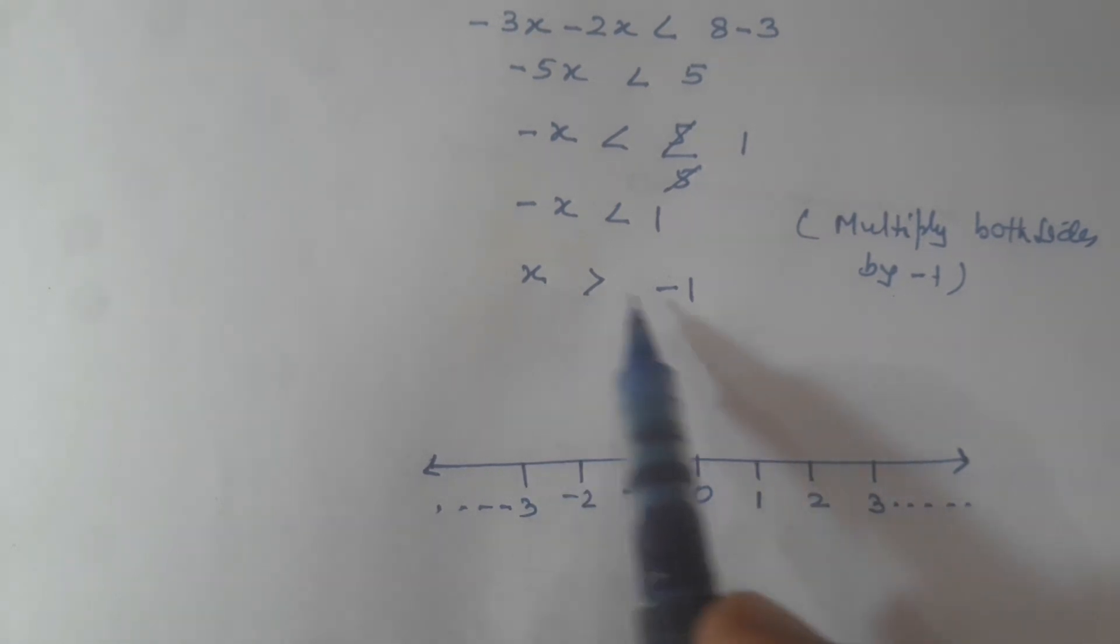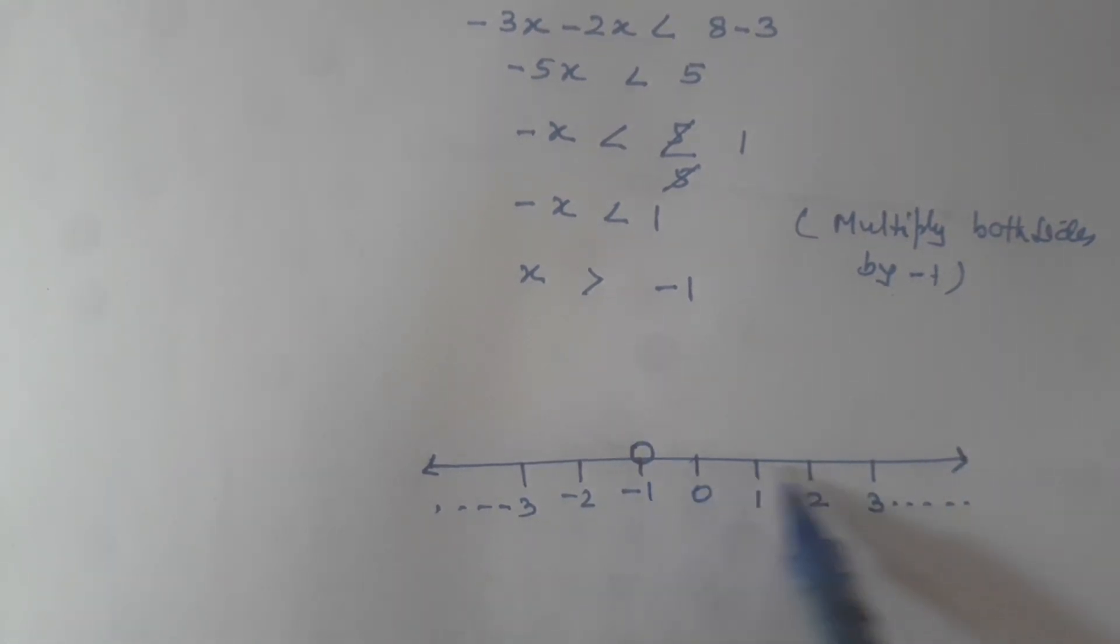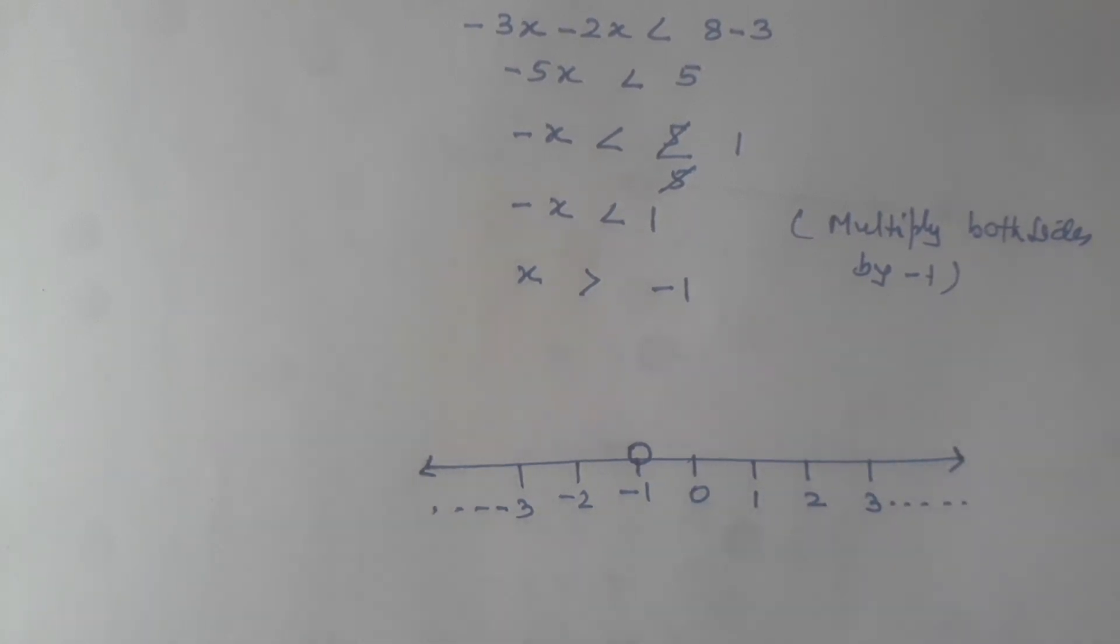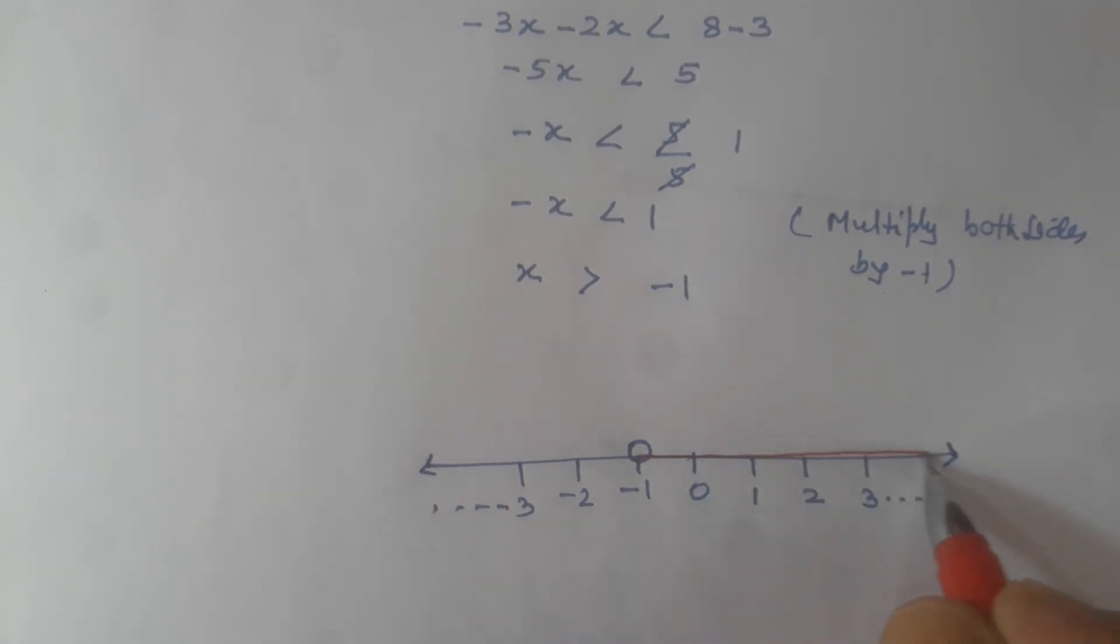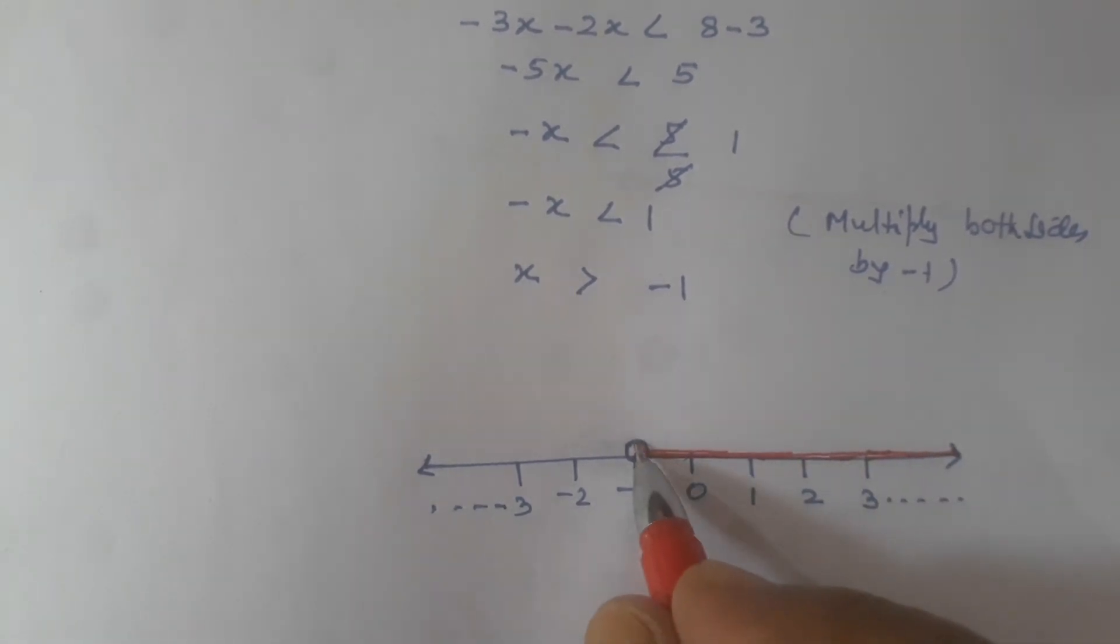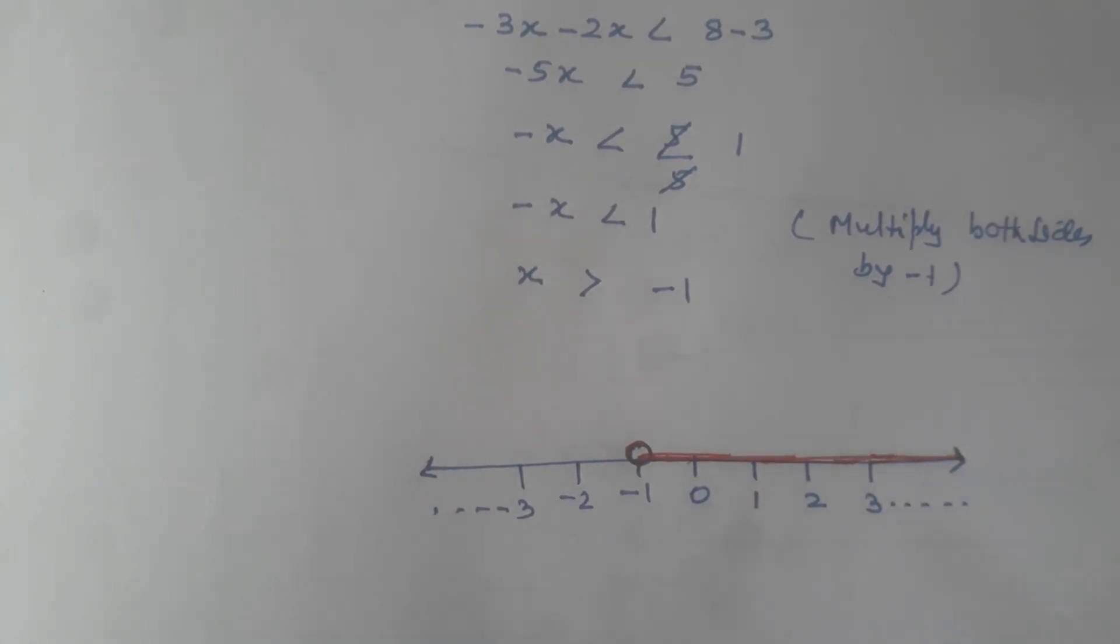X is greater than minus 1, which means the right side of minus 1: 0, 1, 2, 3, and so on. So we darken this side to show where the solution values go. This is an open circle. This is our answer on the number line: x greater than minus 1.